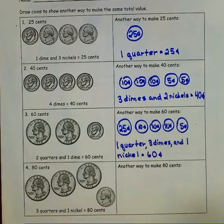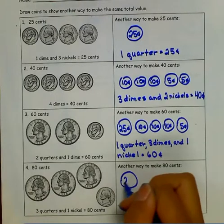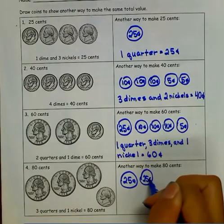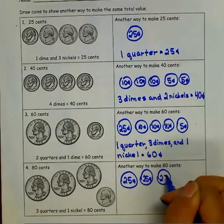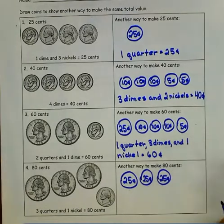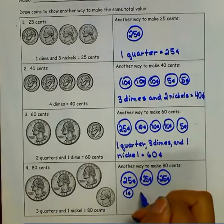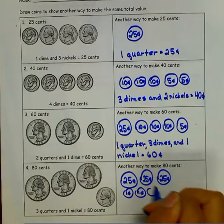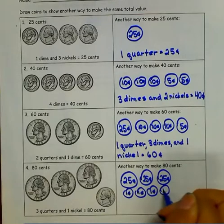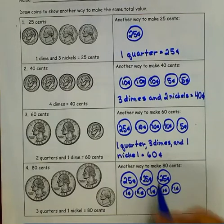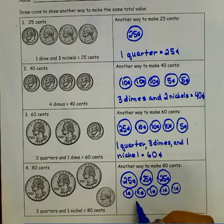Number 4 — three quarters and one nickel was used to represent eighty cents. I can also use two quarters, but this time I'm going to use five pennies to represent my five cents. So three quarters is seventy-five cents plus five pennies is eighty cents.